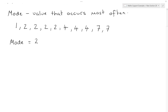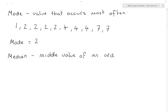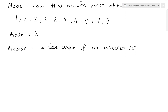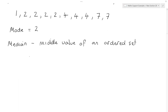So we can write down: mode is equal to 2. Now the median is defined as the middle value of an ordered set of data. And that bit — an ordered set — is very important.